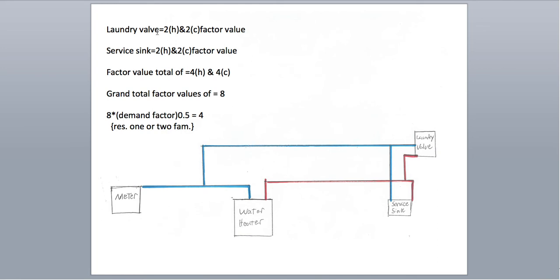So here we go. You have a laundry valve — factor value of two for the hot, two for the cold. And you also have your service sink — factor value of two for the hot, two for the cold. So your factor value totals are four hot, four cold. Your grand total factor values are eight. So you take eight, multiply it by the demand factor, which for residential one or two family is 0.5. Eight times 0.5 gives you four.